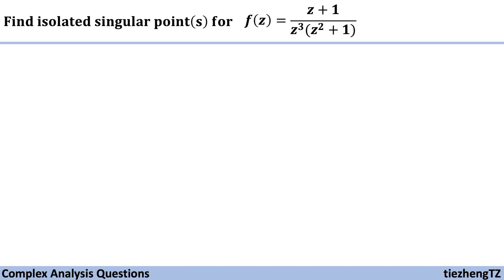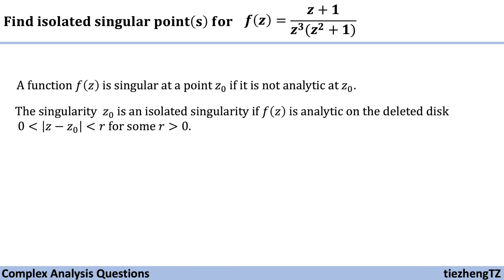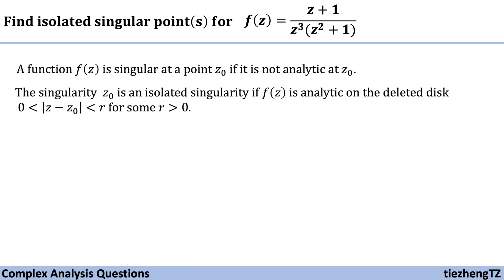In the previous video, we already introduced some background knowledge. A function is singular at the point z0 if this function cannot be analytic at that z0, and the singularity z0 is an isolated singularity if this function is analytic on the deleted disk, where the modulus of (z minus z0) is between 0 and r for some positive r.